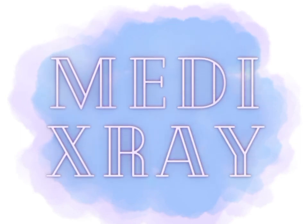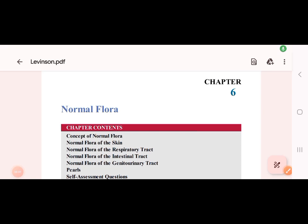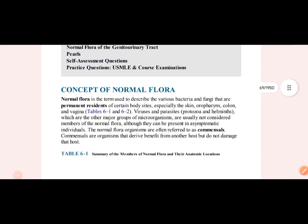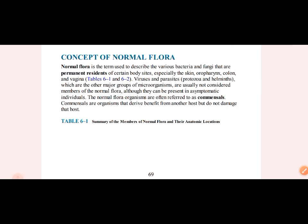I am going to start with the normal flora. The normal flora is present in humans. In humans, there are bacteria also present that act as commensals. They take advantage of humans but don't cause any damage. We call it commensalism. These organisms are called commensals, permanent residents, and we call them normal flora.